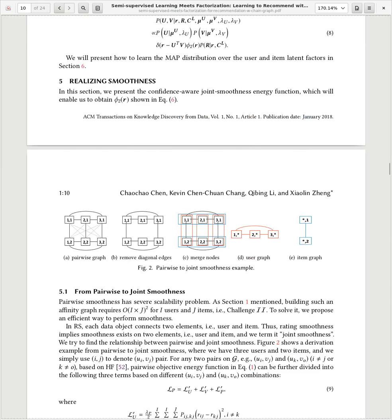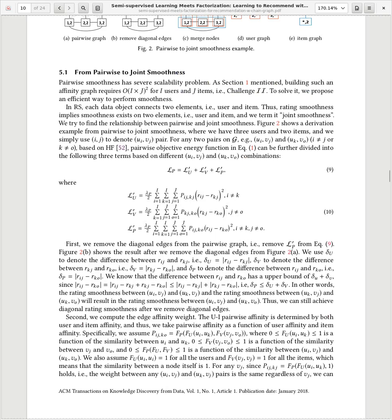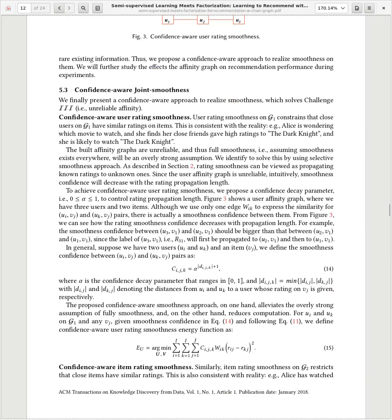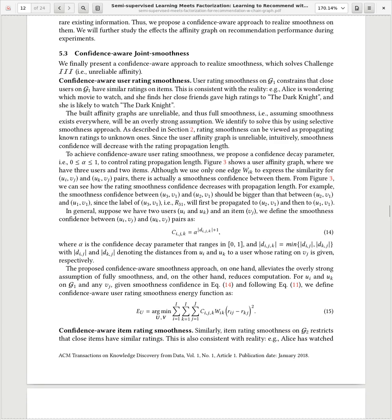So they have this section realizing smoothness when they describe, again, this joint smoothness separately on items or separately on users. Then there is a section about confidence-aware user ratings smoothness. So, as I mentioned here, they have this small alpha and then the distance on the affinity graph, which makes it decay, which makes the propagation of the smoothening out decay such that a rating that is far away in terms of the users and items doesn't impact another rating.